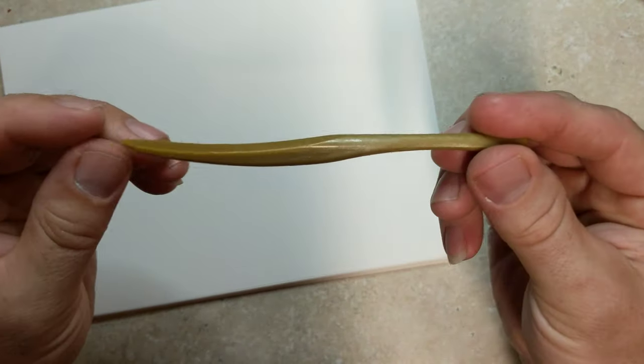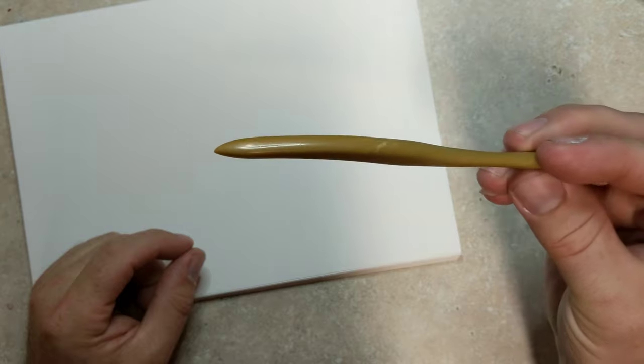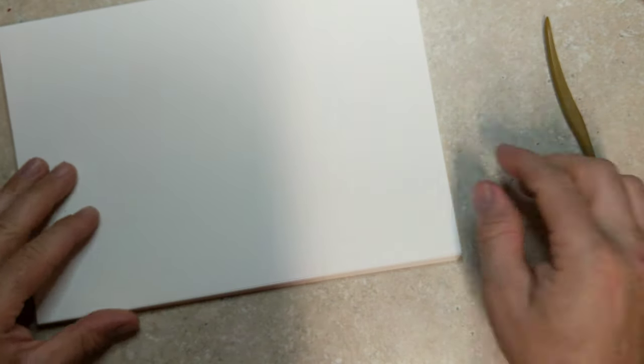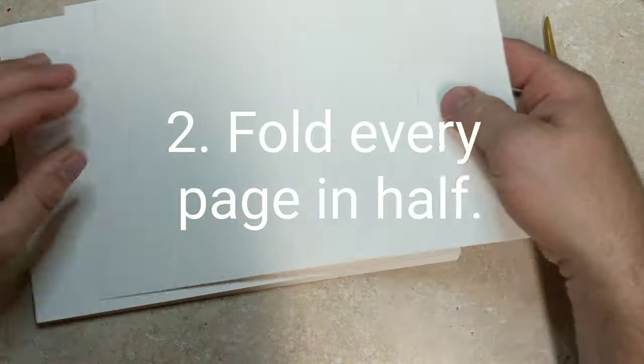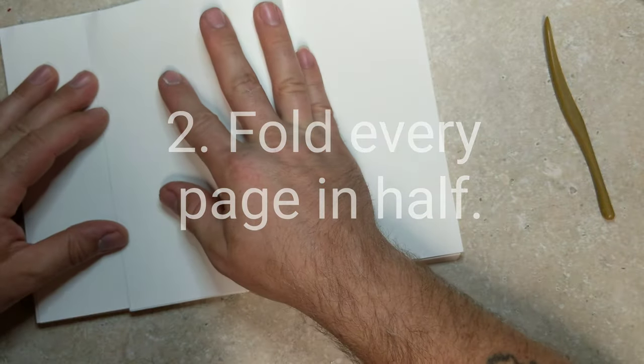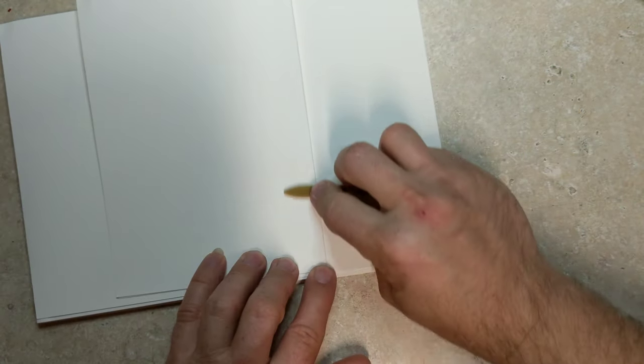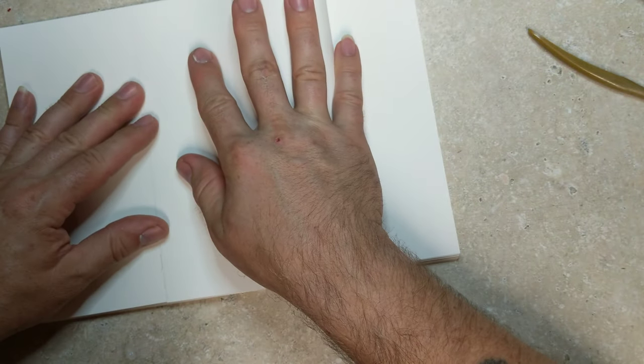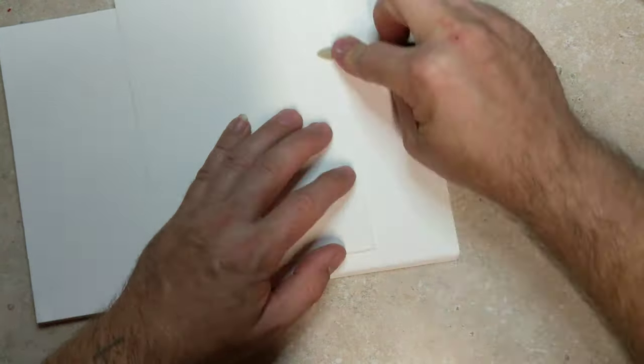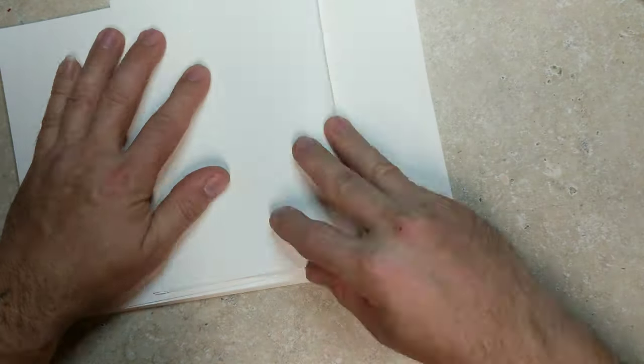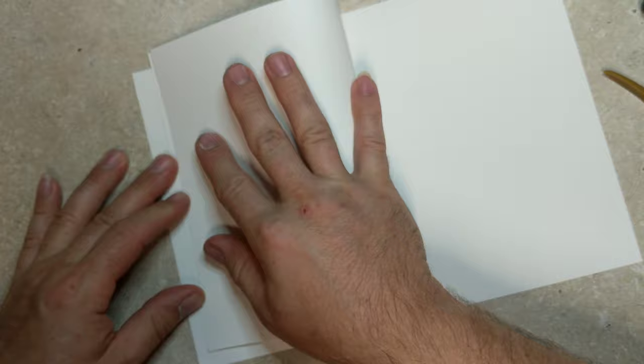Once I had the entire pad torn apart, I set the cover aside and I got out my bone folder. This is a special little folder. You don't need this. You can use a ballpoint pen or plastic spoon or something like that. It just kind of helps keep from wearing your fingers out. You're going to fold every page in half.